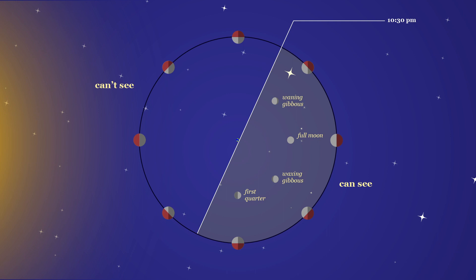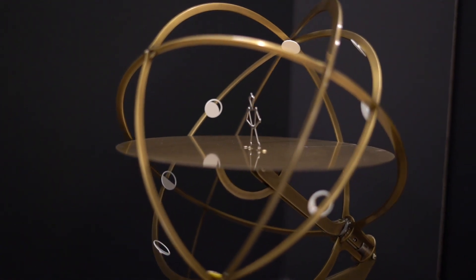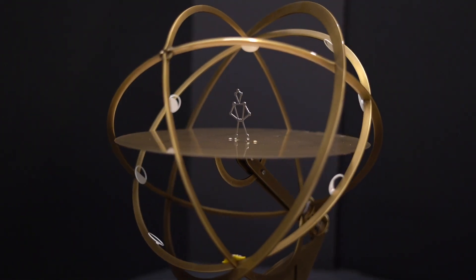while the third quarter, waning crescent, new moon, and waxing crescent can never be seen. Note that at 10:30 p.m., the sun is well below the western horizon, almost to midnight.